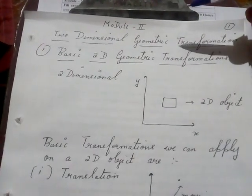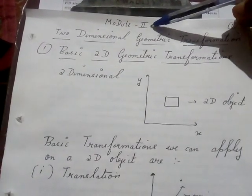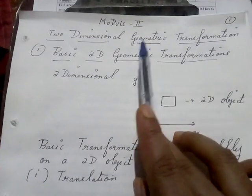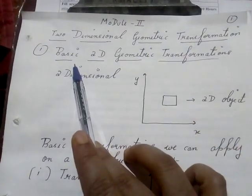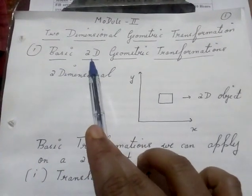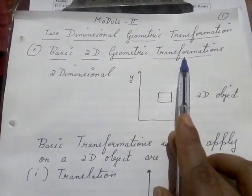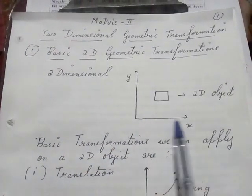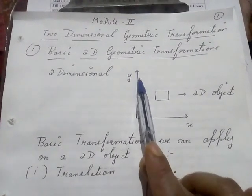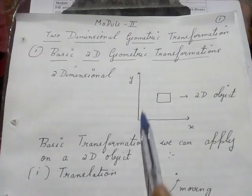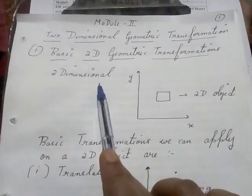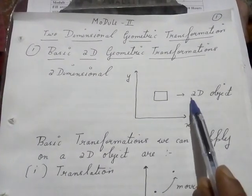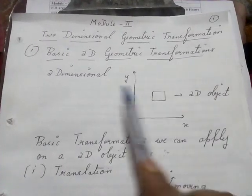Hello students, today I will be teaching a topic from Module 2, and that topic is known as two-dimensional geometric transformation. Under this topic, the first topic is known as basic two-dimensional geometric transformation. Two-dimensional means having only two axes — the x-axis and the y-axis. Any object placed in this two-dimensional space is known as a two-dimensional object.